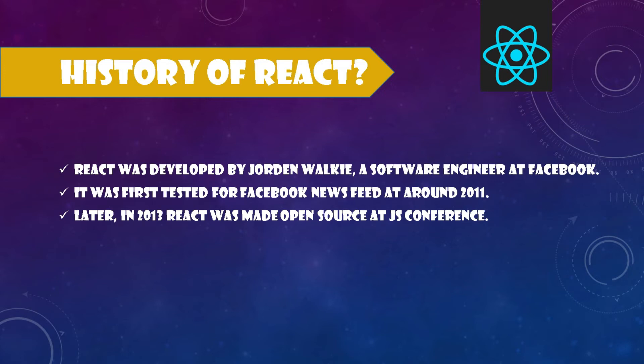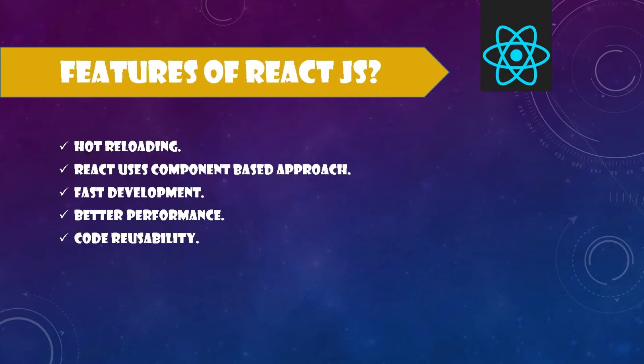React was first designed by Jordan Walke, a software engineer at Facebook. It was first developed for the Facebook news feed around 2011 as a testing purpose, performed very well, and later in 2013 it was made open source officially at JS Conference. The features of React include hot reloading, which means you can see live changes during development, and secondly it uses a component-based approach, which means you can separate your website into multiple components and design and implement logic for each separately. This makes development faster and allows you to reuse code in your application.